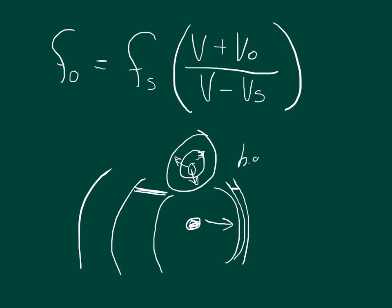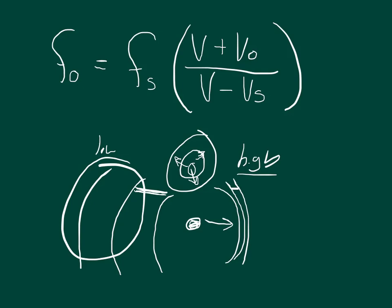So this frequency — is the frequency the bicyclist hears higher or lower than the car's normal frequency? It's lower, so we would expect him to be getting the low-frequency end. If he's getting that end and we know he's traveling in the same direction as the car, then he is behind the car. That means he's moving toward the car, but the car is moving away from him faster than he is moving toward the source.